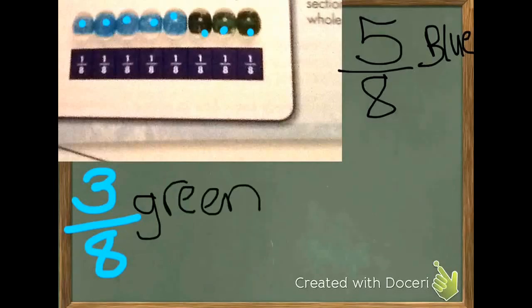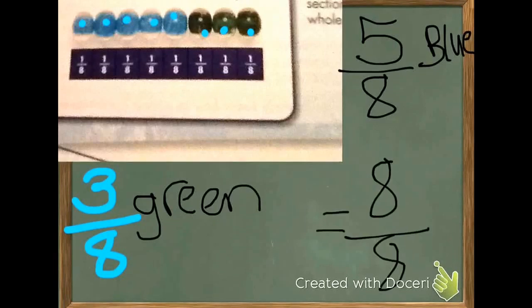Now my question is how many beads make a whole? What fraction makes a whole necklace? Well, there are eight beads, that's all of them, out of eight. That equals one whole.